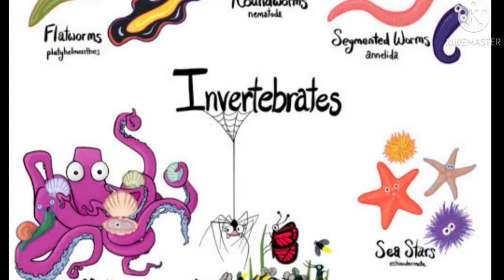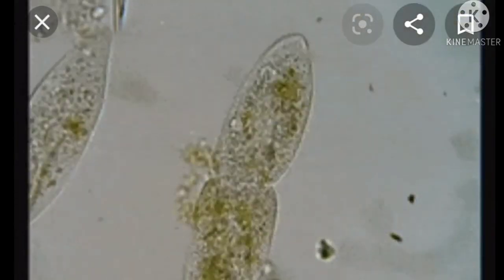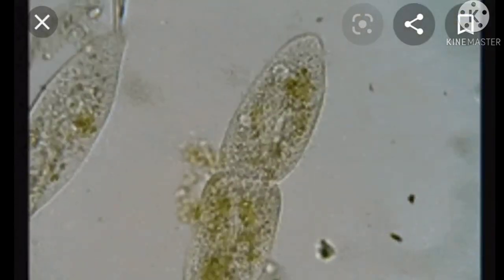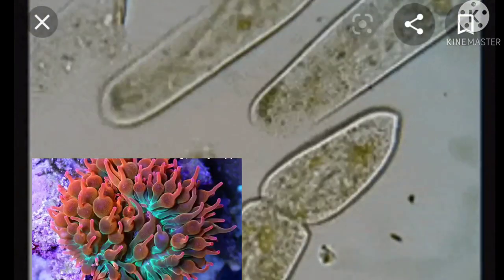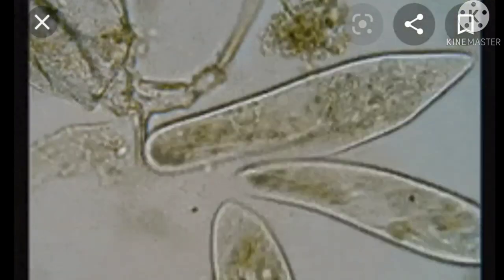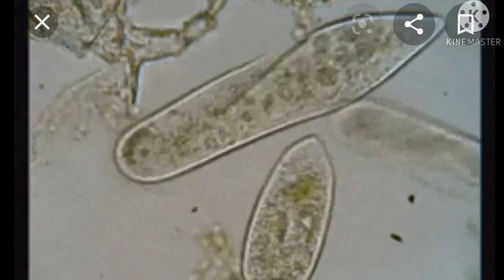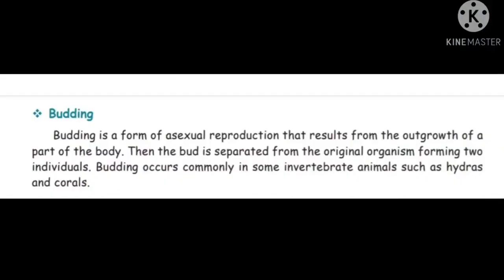Fission is a splitting reproduction. Invertebrates — that is, organisms without a backbone and with many cells — undergo this process. In this method, one organism divides itself into two organisms. For example, flatworms, sea anemones, and sea cucumbers split into two parts, and each part regenerates into a new complete organism.